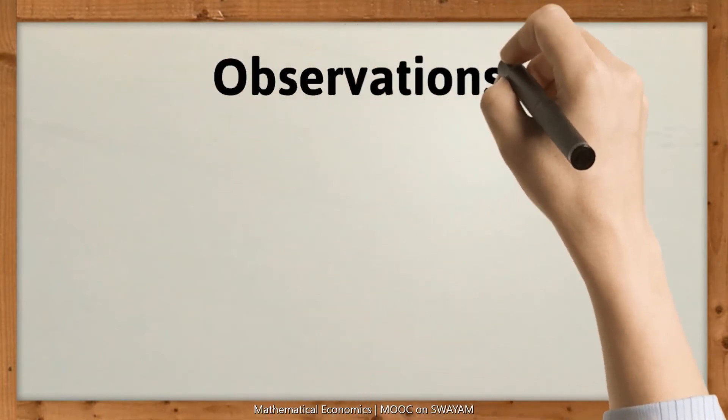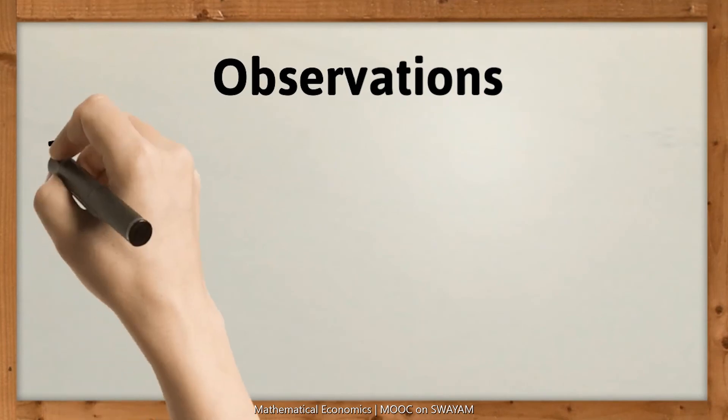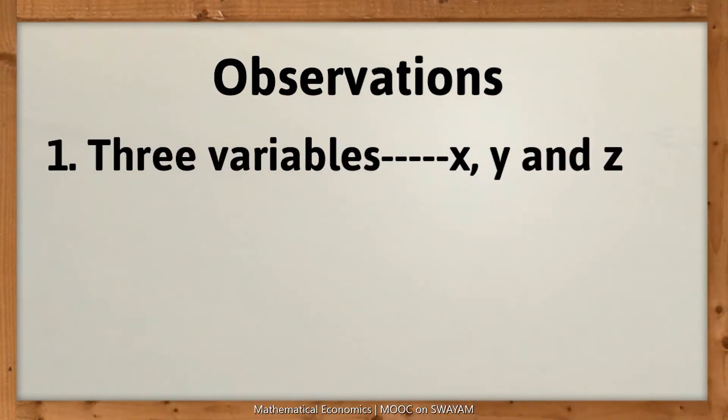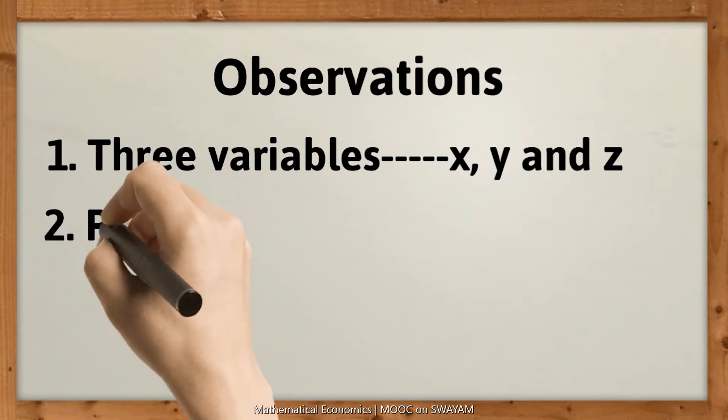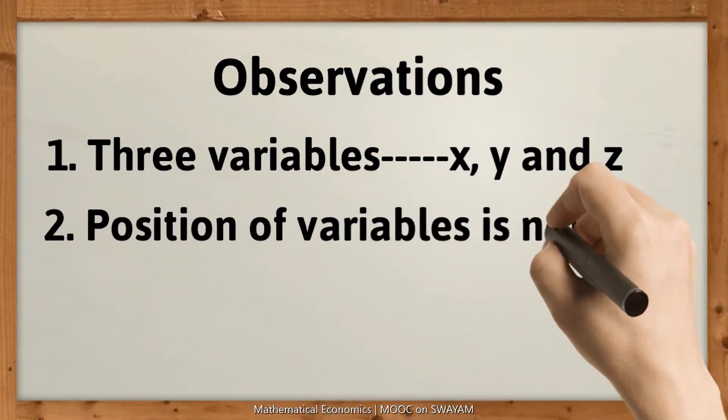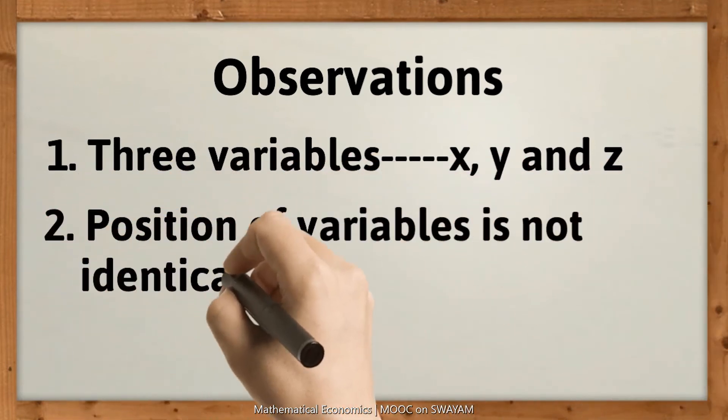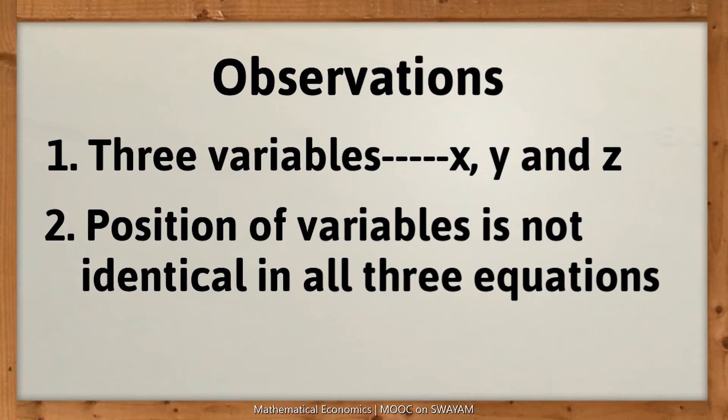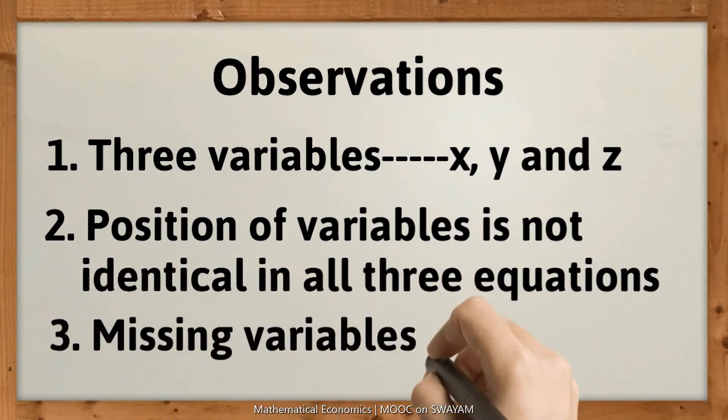The observations are: there are three variables, x, y and z. The position of the variables in all the three equations are not identical. Variable y is written first in the second equation. Variable z is missing in the second equation and variable y is missing in the third equation.